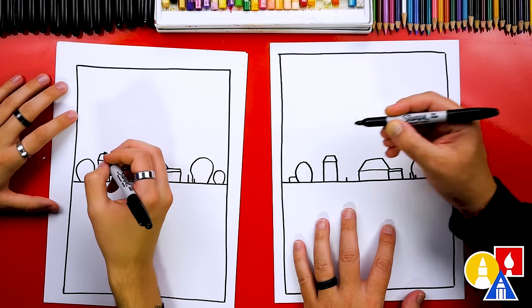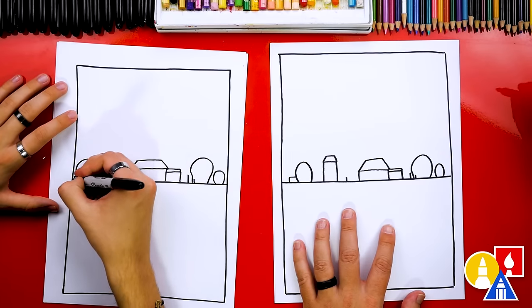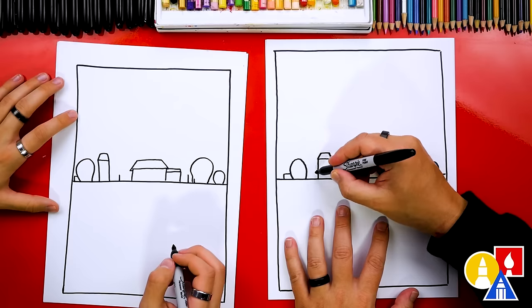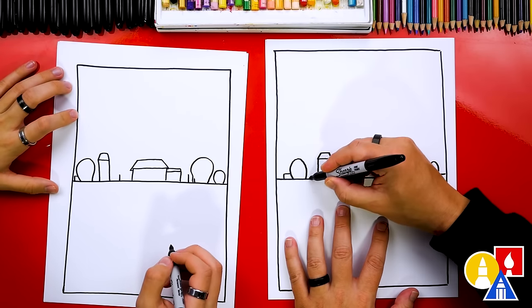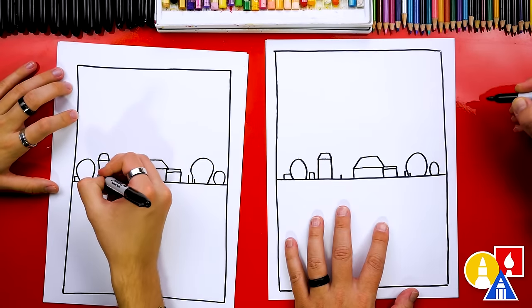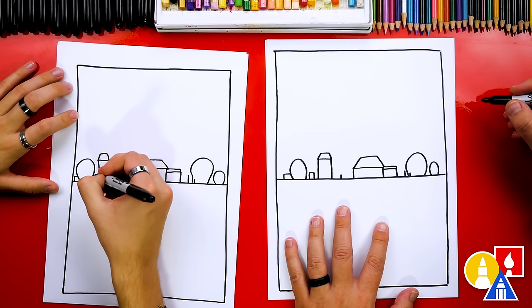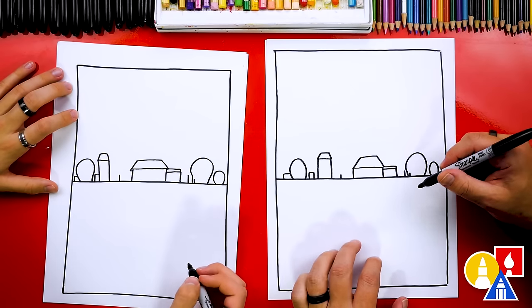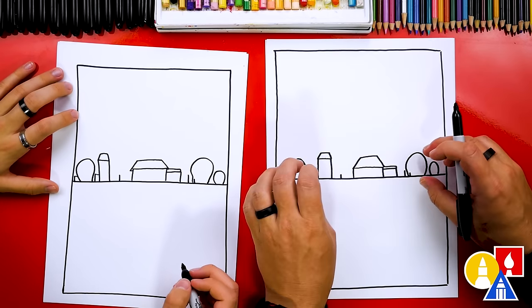That's the fun thing about art is you can add as many different things as you want to your drawing. You don't have to draw exactly like us. You can just use our drawings as inspiration. And then I have a little rectangle shape over here. Maybe there's another building that's just way off in the distance. This is looking super cool already, and we just have the background in.